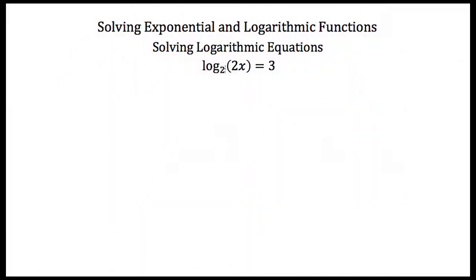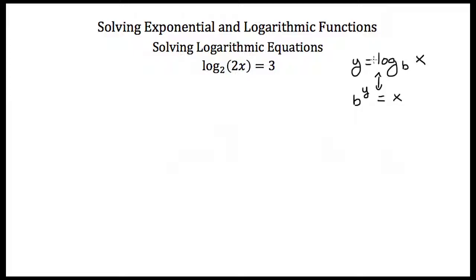Now what if we couldn't use the one-to-one property? Here I have the log base 2 of 2x is equal to 3. I'm not taking the log of both sides, so I can't use the one-to-one property, but I still have my variable inside a log. The easiest way to get a variable out of a logarithm is to rewrite it as an exponential equation. If y equals the log base b of x, I can rewrite this as b to the y power equals x — these two expressions mean exactly the same thing.